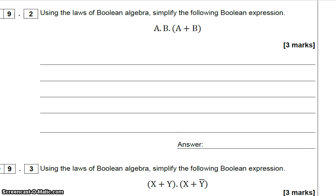This video I'm going to show you a couple of examples of how we can simplify Boolean algebra. If we look at this one, we've got A and B, and then we've got A or B in brackets, which means we need to multiply out the brackets.